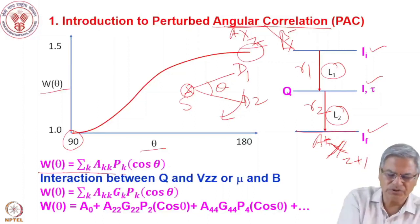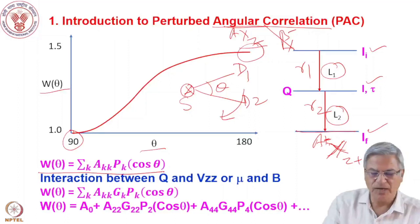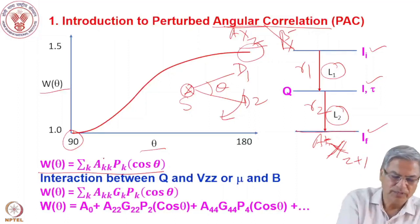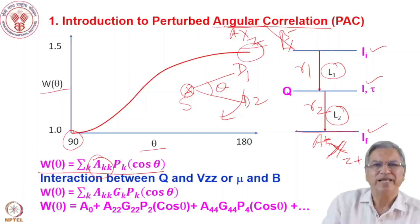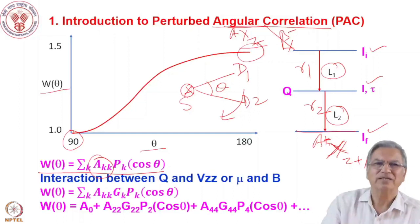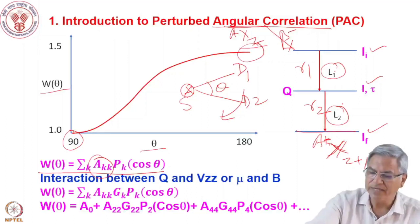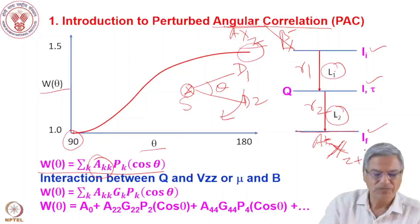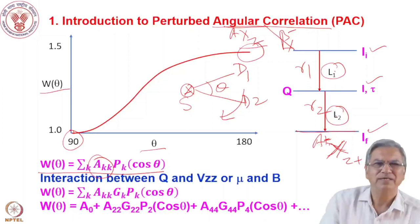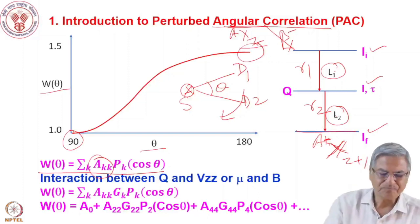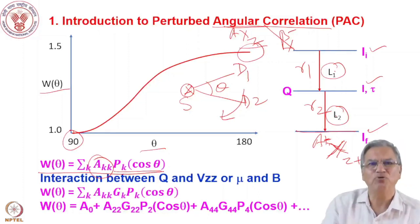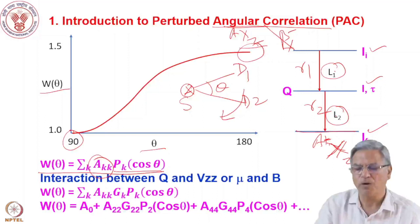The expression for the angular correlation function W(θ) depends on the directional correlation coefficients A_kk, which are products of the Clebsch-Gordan coefficients between the initial state, intermediate state, and final state for the first and second transitions. One can calculate these using angular momentum coupling. P_k(cosθ) is the Legendre polynomial of order k. So this is the general angular correlation between two gamma rays.